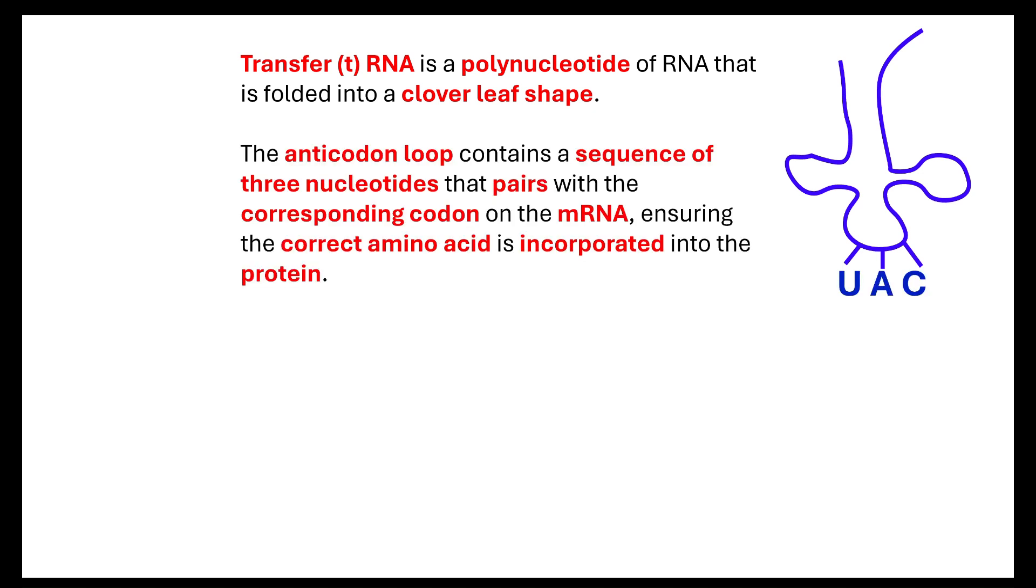Now, there is an anticodon loop, which is always at the same position. Now, that anticodon loop contains a sequence of three nucleotides, and those three nucleotides are going to pair with a corresponding codon on the mRNA. So, that's important that we note that the mRNA, like the DNA, has the codon, the anticodon is found on the transfer RNA.